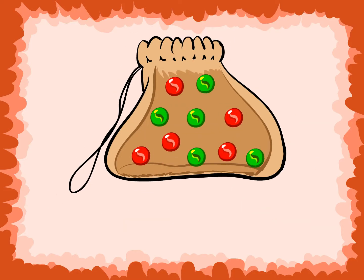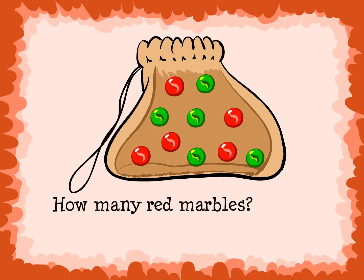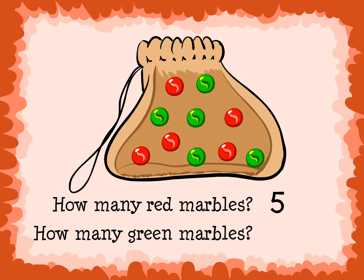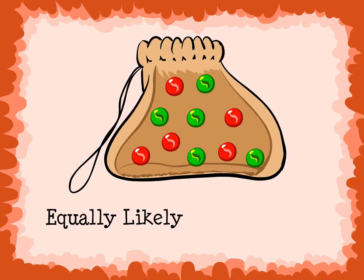Now look at this bag of marbles. What would you predict the outcome to be if you were to pick one marble out of the bag? How many red marbles are in the bag? 5. How many green marbles are in the bag? 5. I would predict that it is equally likely to pick a red marble or green marble because 5 is equal to 5.